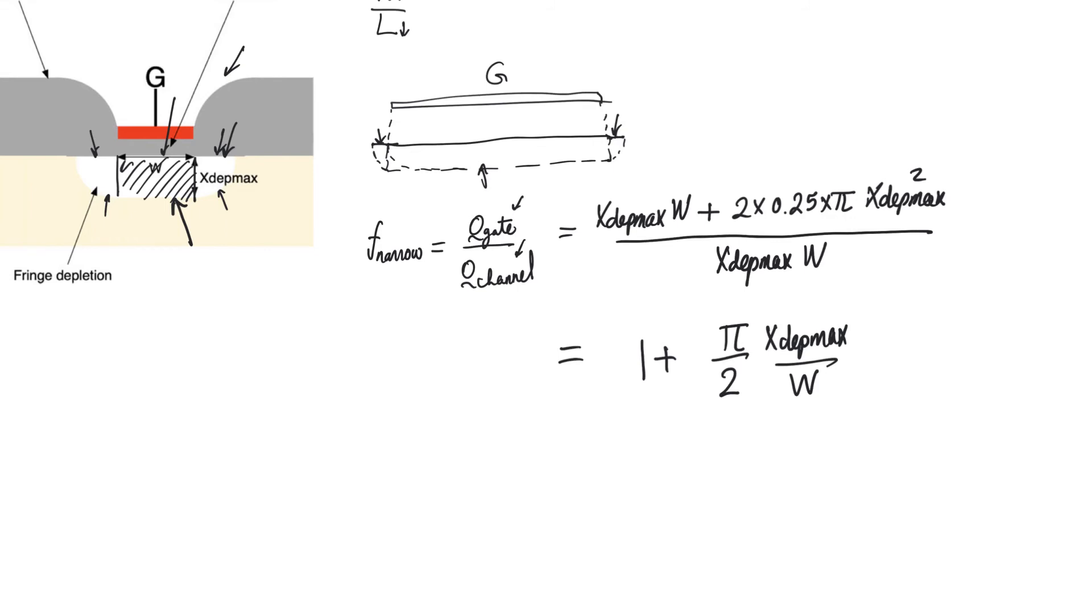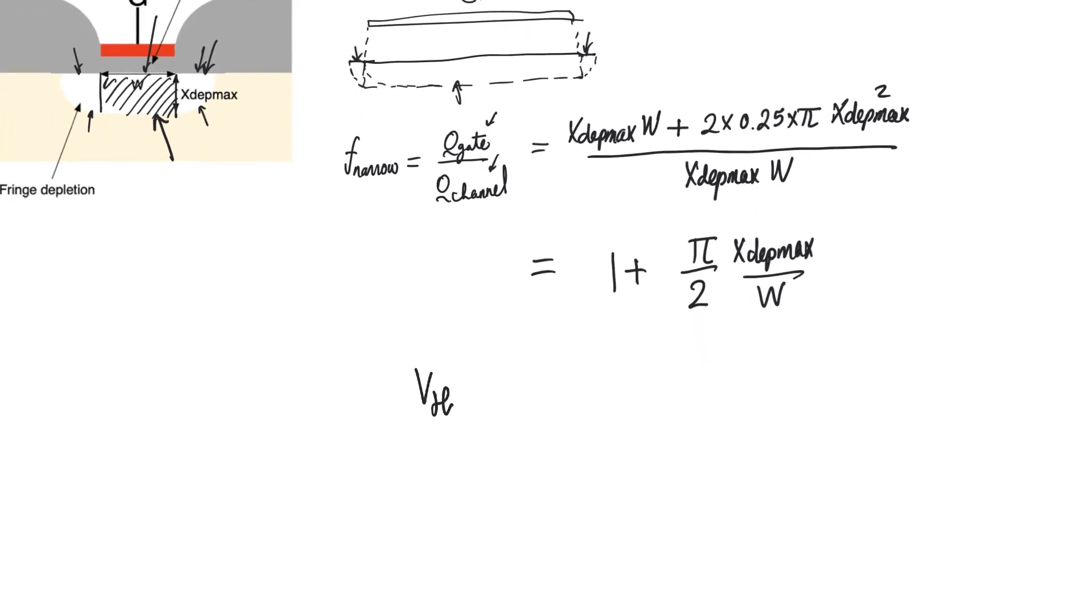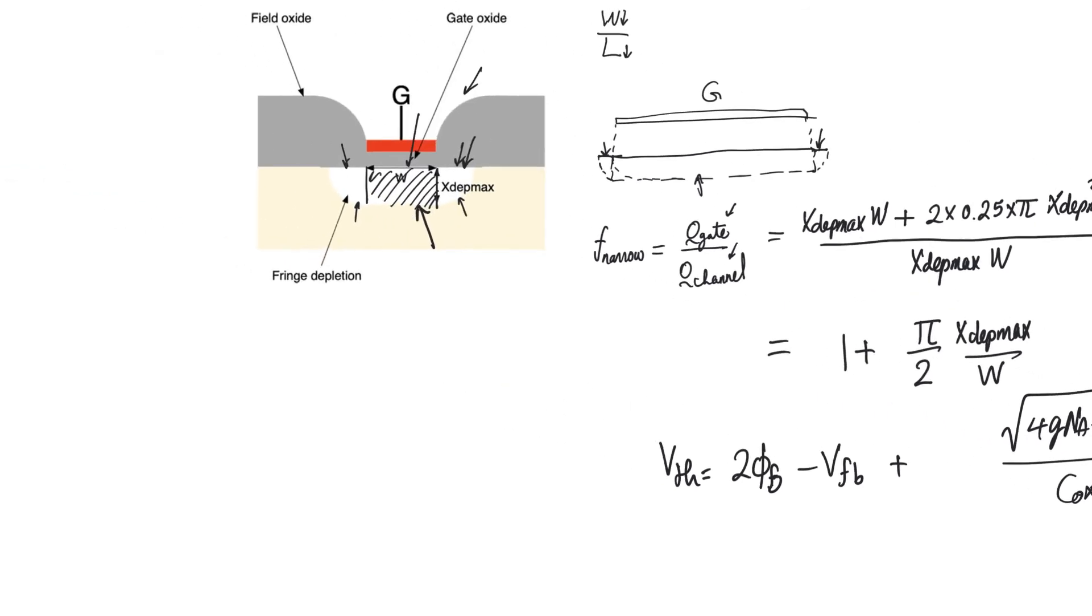How does this affect V threshold? This affects V threshold by multiplying the middle term. V threshold consists of 2 phi B, which is the surface potential, which has no relationship whatsoever to either the short channel or the narrow channel effects. Same for flat band potential, which is constant and related to work functions. But then there's a third term, which is basically Q oxide. This is 4Q Na epsilon phi B. This is the charge accumulated under the oxide divided by C oxide. This was calculated with the assumption that the oxide only needs to support the charge in the rectangle.